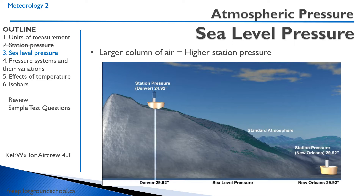Air traffic control can give every aircraft the altimeter setting, ensuring all aircraft are on the same altimeter and the same altitude — or at least a common standard. A higher column of air means higher station pressure, so at sea level there's a greater column of air above, making pressure higher there than at an elevated station.